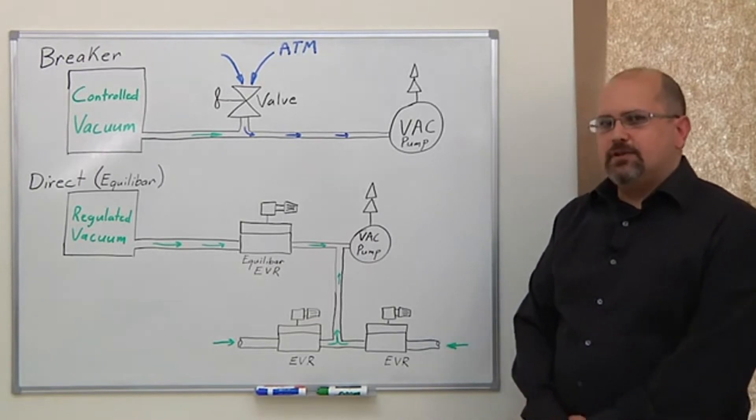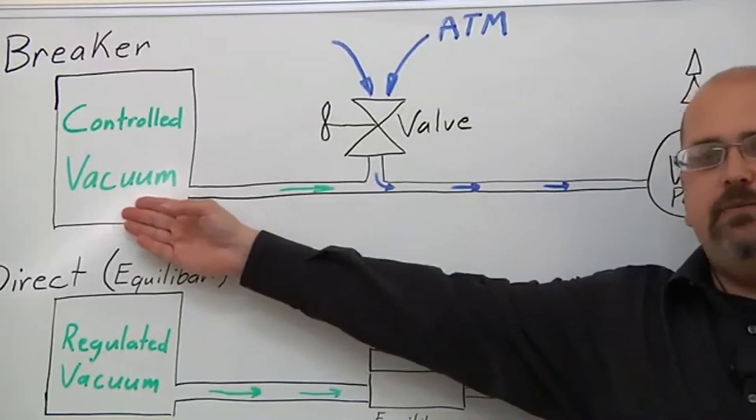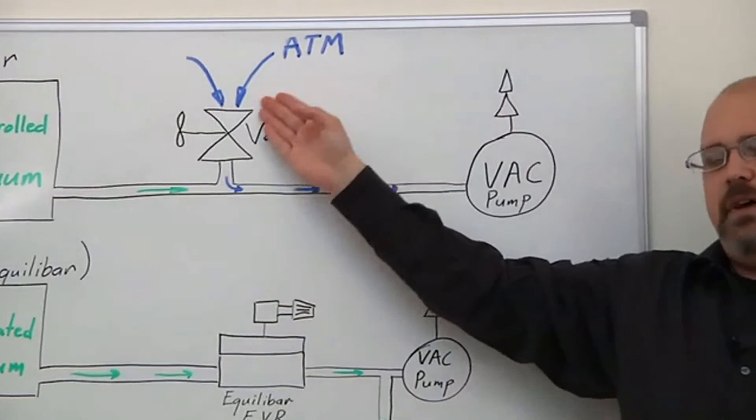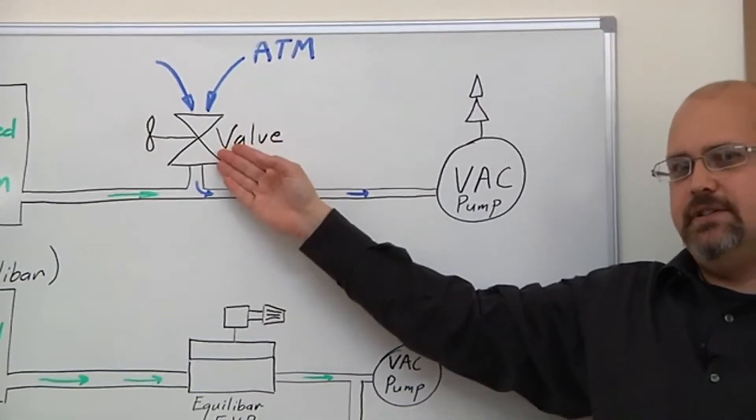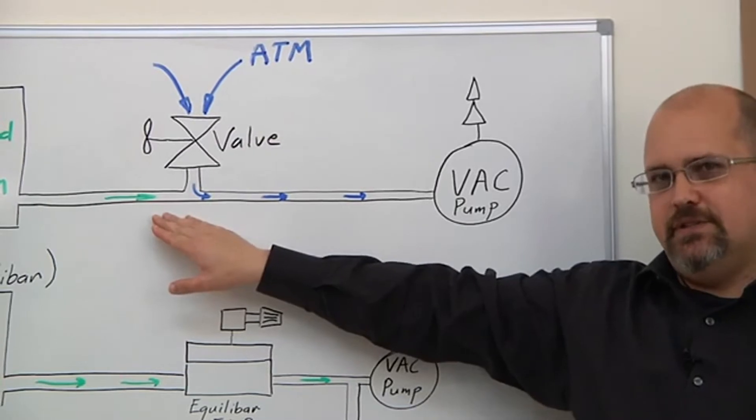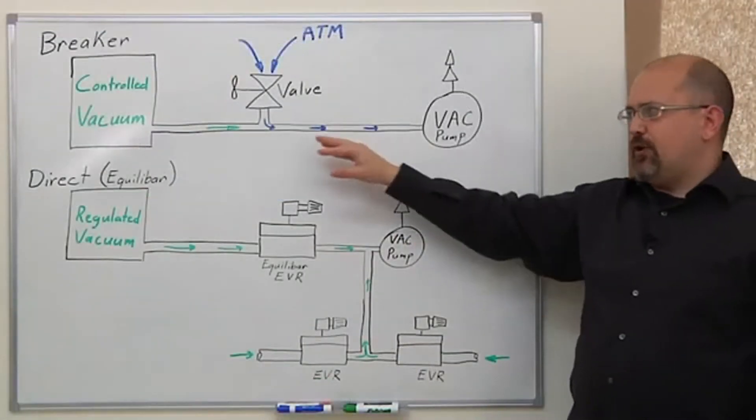One method is called the vacuum breaker. In a vacuum breaker, the system vacuum is controlled by a valve which modulates the amount of atmospheric air that is allowed into the system. This atmospheric air breaks the vacuum in the system and it overwhelms the vacuum pump's ability to draw into deeper vacuum.